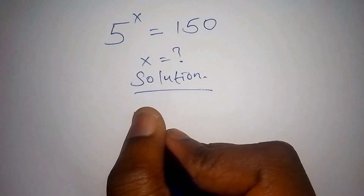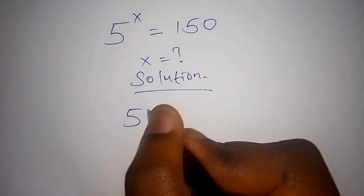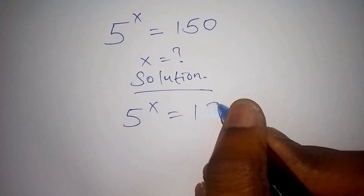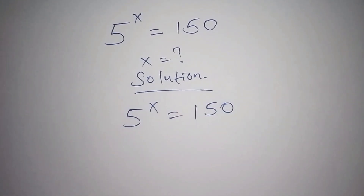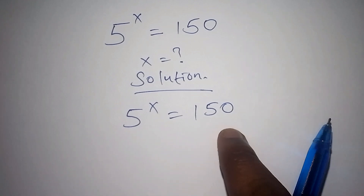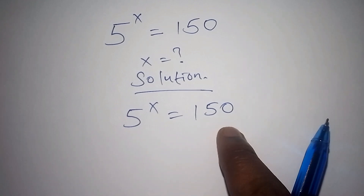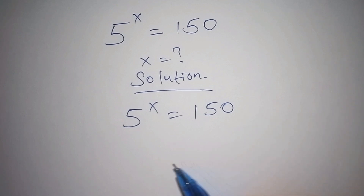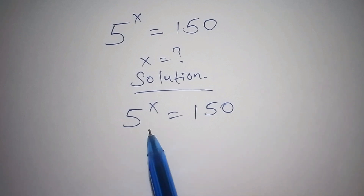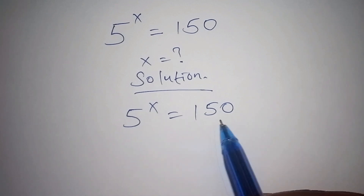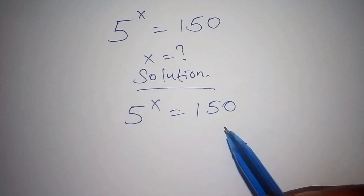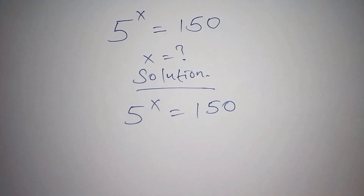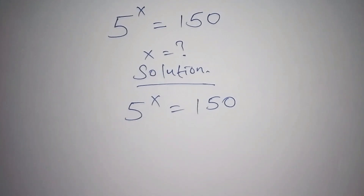So what we have is 5 to the power of x is equals to 150. The first thing we should consider is if 150 can be expressed to the base of 5, which is impossible. So the next thing we need to do is to express 5 to the power of x and 150 to the log — we shall introduce the log for both sides.